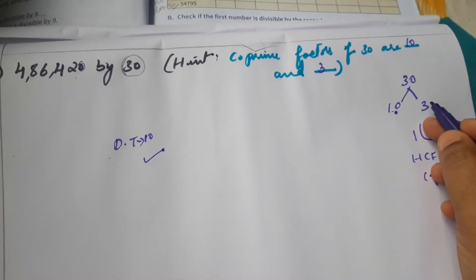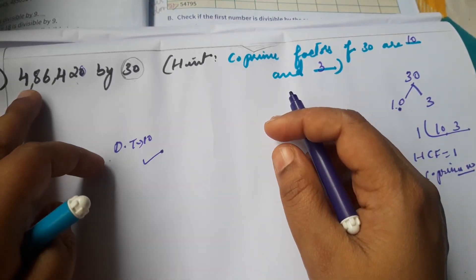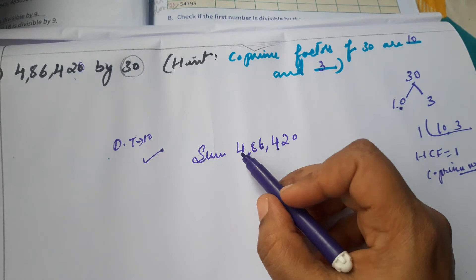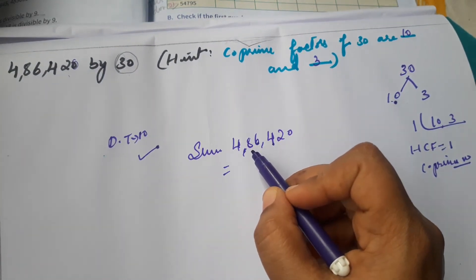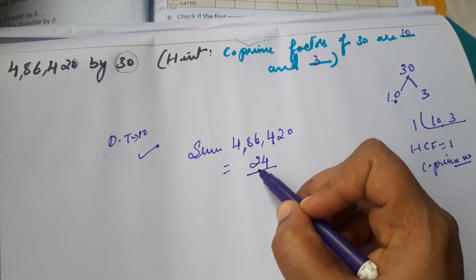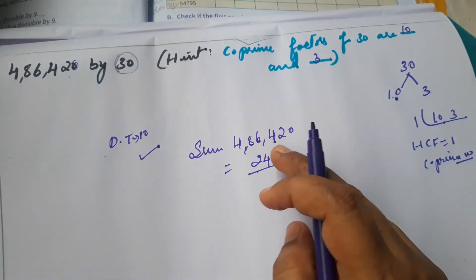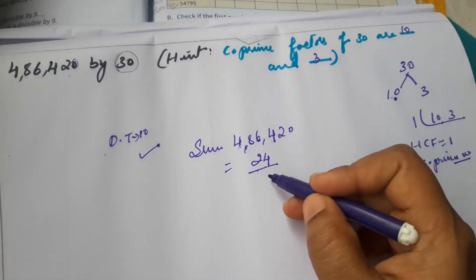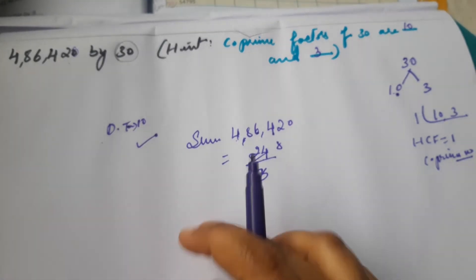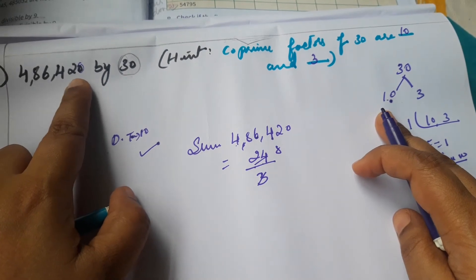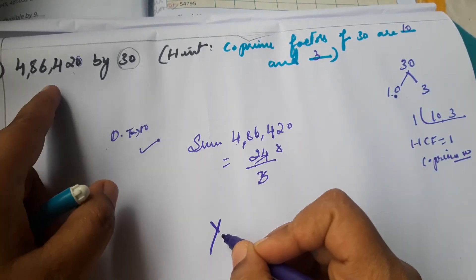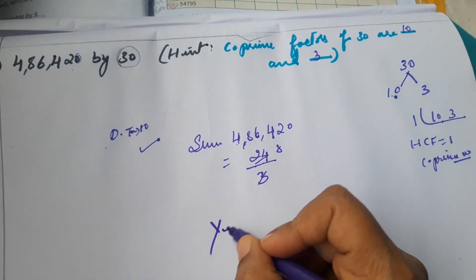Now checking with 3: sum of digits of 4,86,420 — 4+8=12, 12+6=18, 18+4=22, 22+2=24. Sum is 24. 24 divided by 3: 3 eights are 24, yes it is divisible. So the number is divisible by 10 and by 3. Therefore 4,86,420 is perfectly divisible by 30 without any remainder. Answer: Yes.